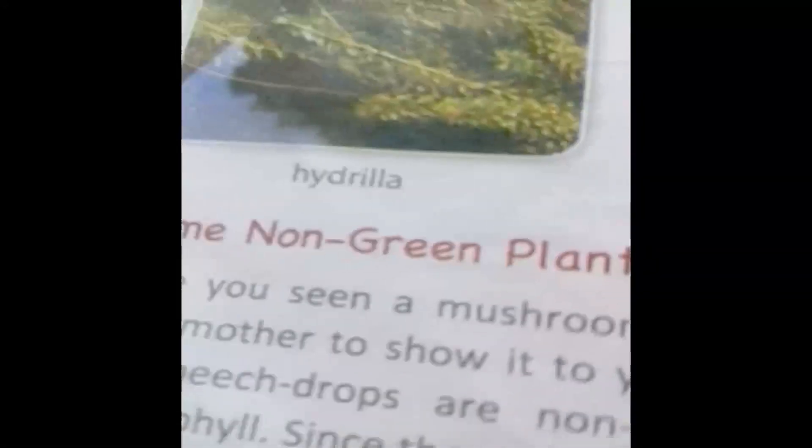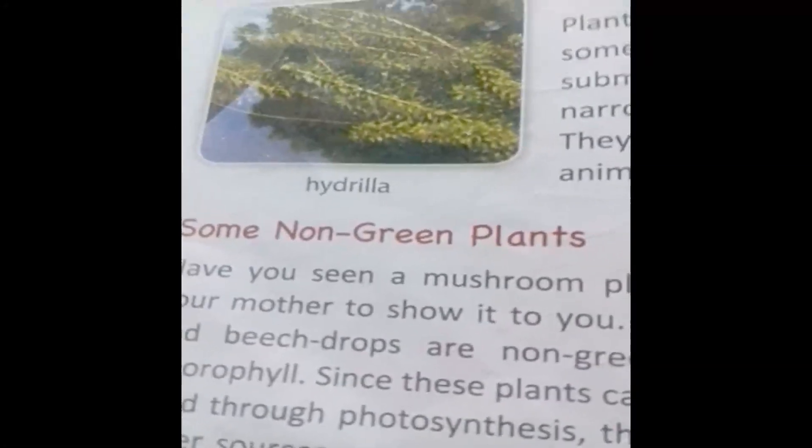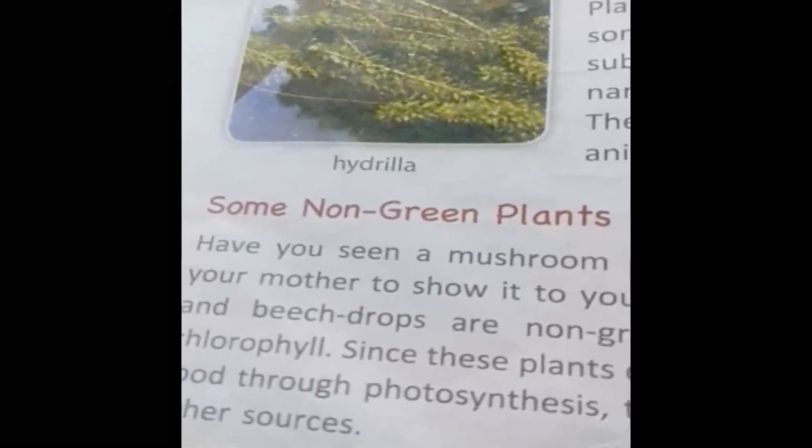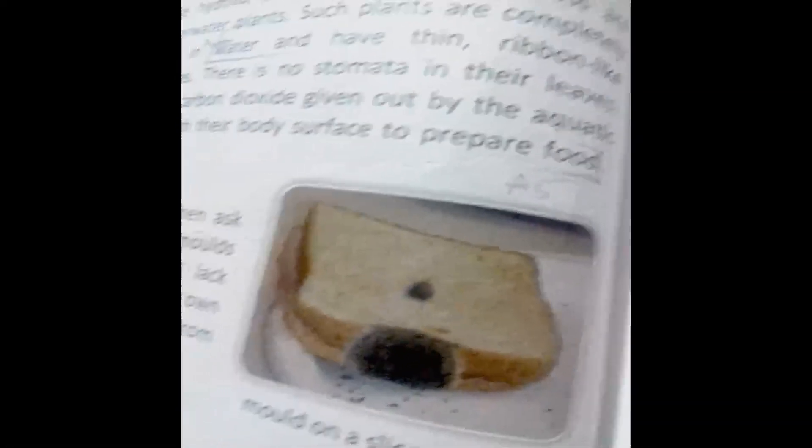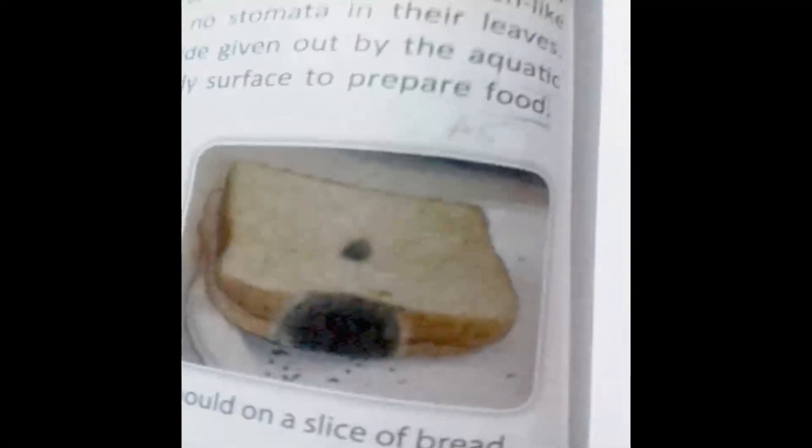So these three types we have seen: floating plants, fixed plants, and underwater plants. Now the next topic we will see is non-green plants. You can see here the picture of bread mold on a slice of bread.